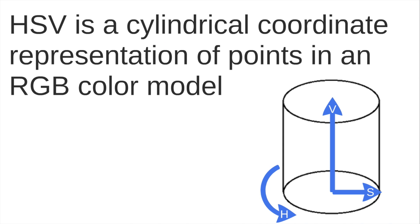HSV is based on a cylindrical coordinate representation of points in an RGB color model. In the cylinder we have H which is an angle, S which is a radius, and V which is a height — it is a conversion from the RGB color model into this cylinder.